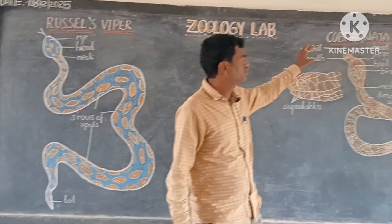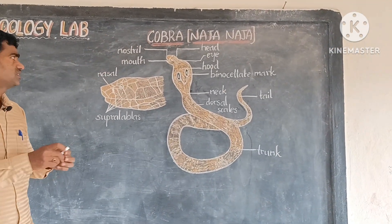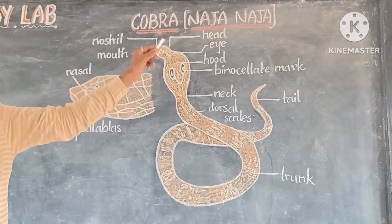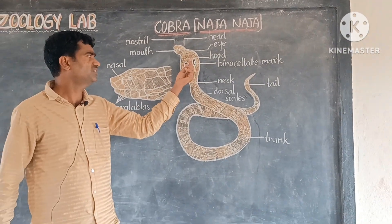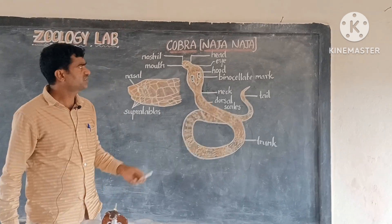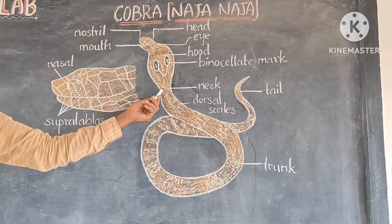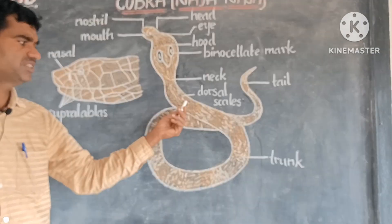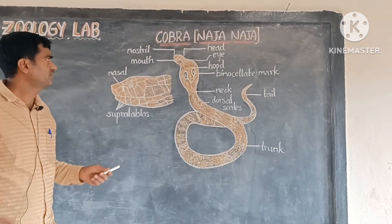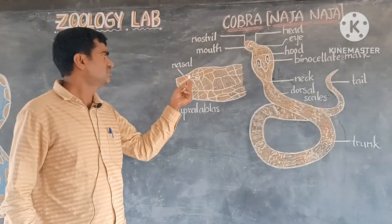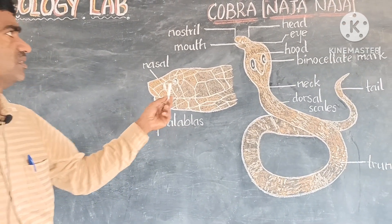This is the Cobra, commonly called Naja-Naja. In the anterior part, it contains nostrils and the mouth is present here. It is called the head region. A pair of eyes are present, and the hood is present — this is called the hood region. A very important character of Naja-Naja is that the binocellate mark is present here. This is the neck region and dorsal scales are present here. The trunk region and posterior part contains the tail region. In the head region, this is the nasal part and supralabial parts are present here.